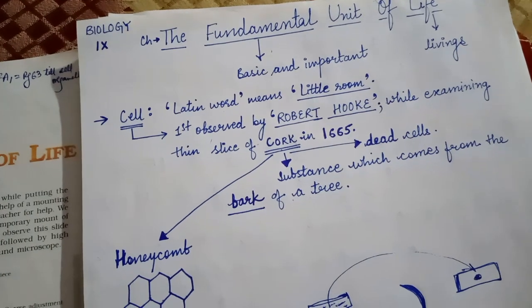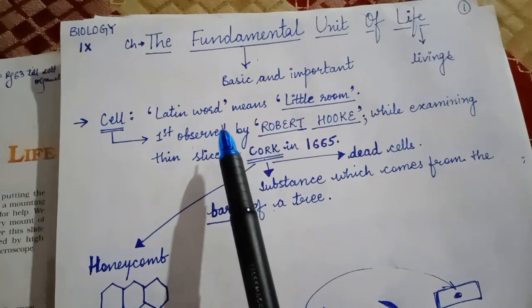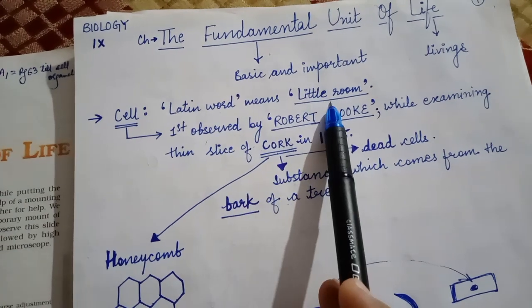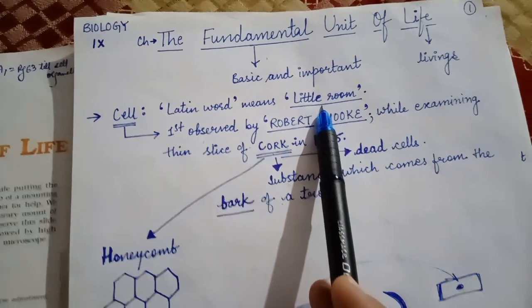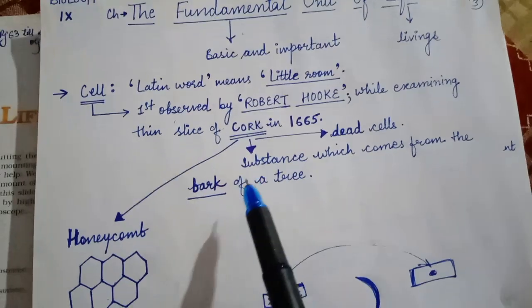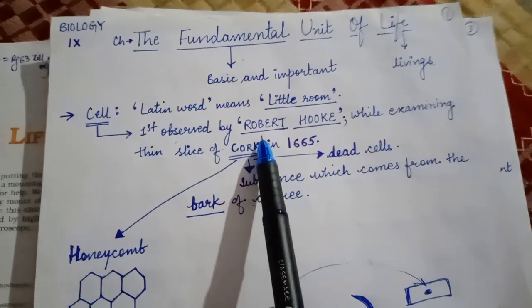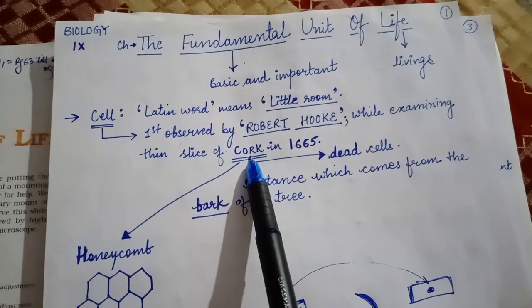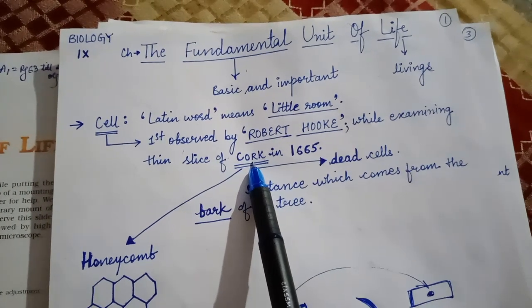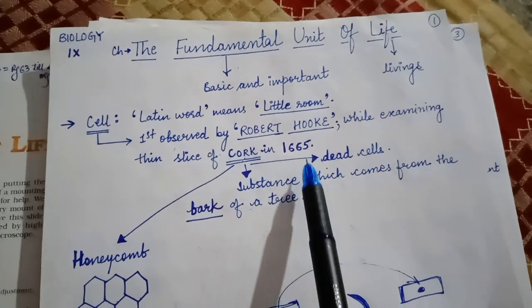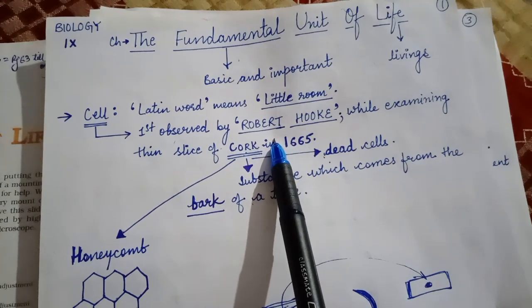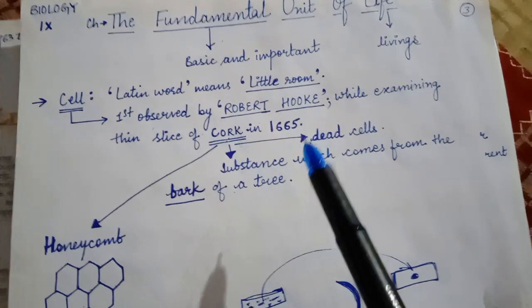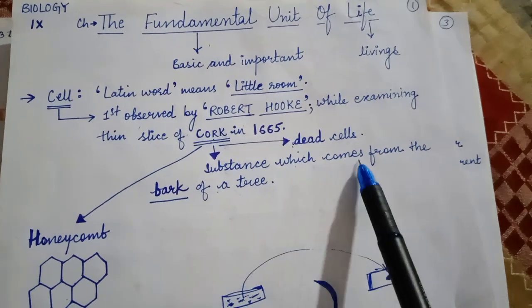Cell derived from the Latin word that means little room, that is a little space. Cell was first observed by Robert Hooke with the help of cork. Cork, that is lakdi ka jo tukda hai, that is having dead cells were observed by Robert Hooke.